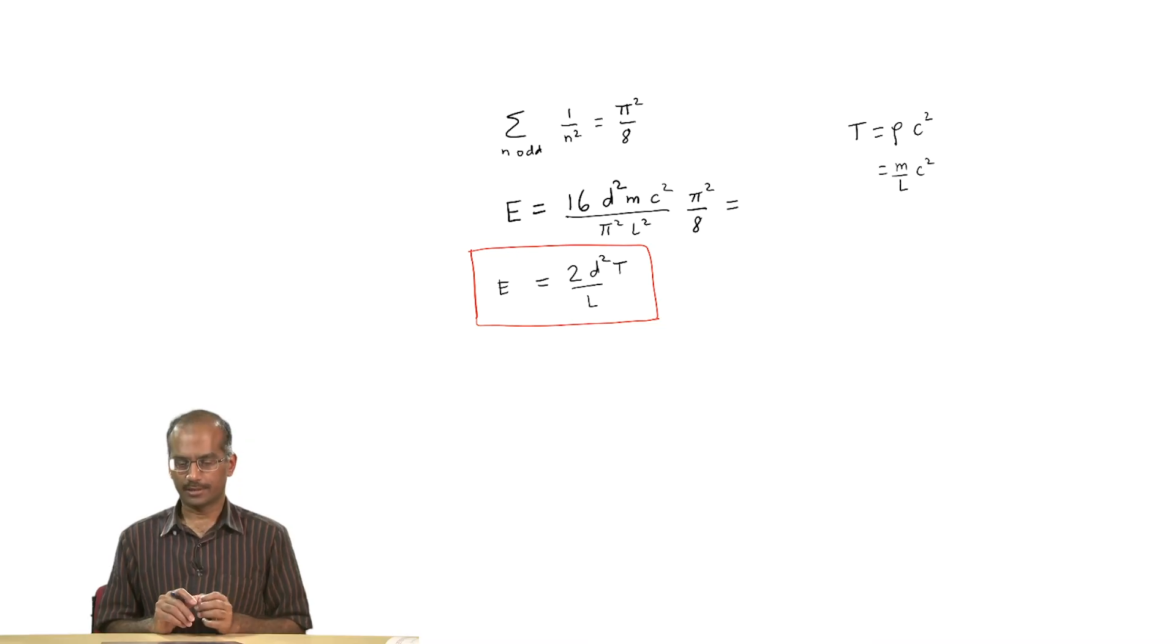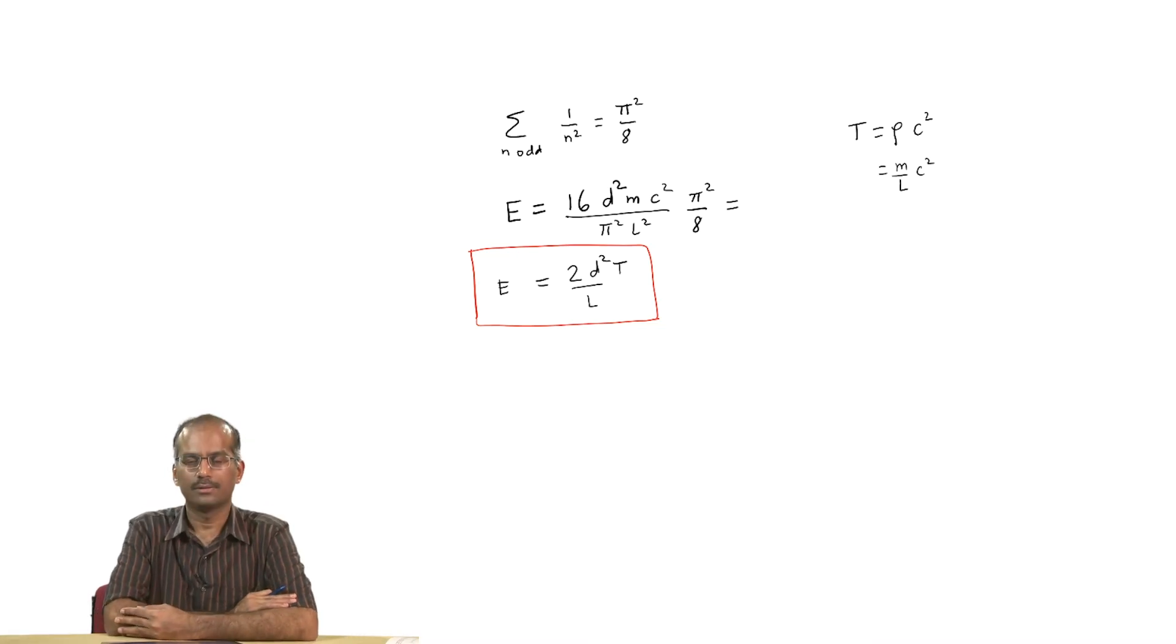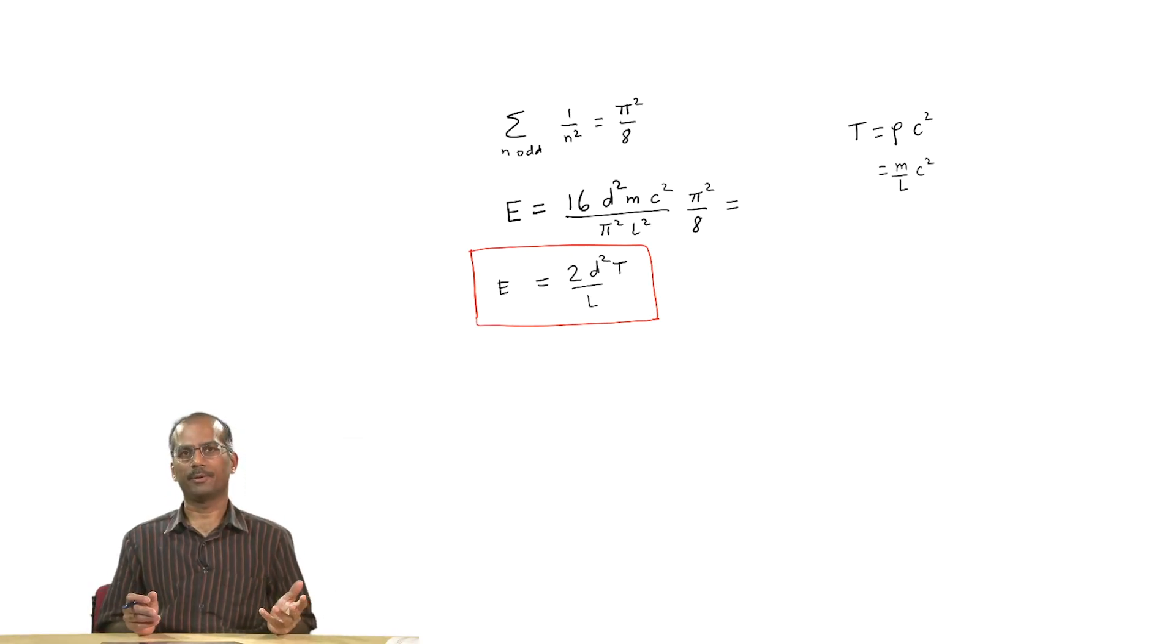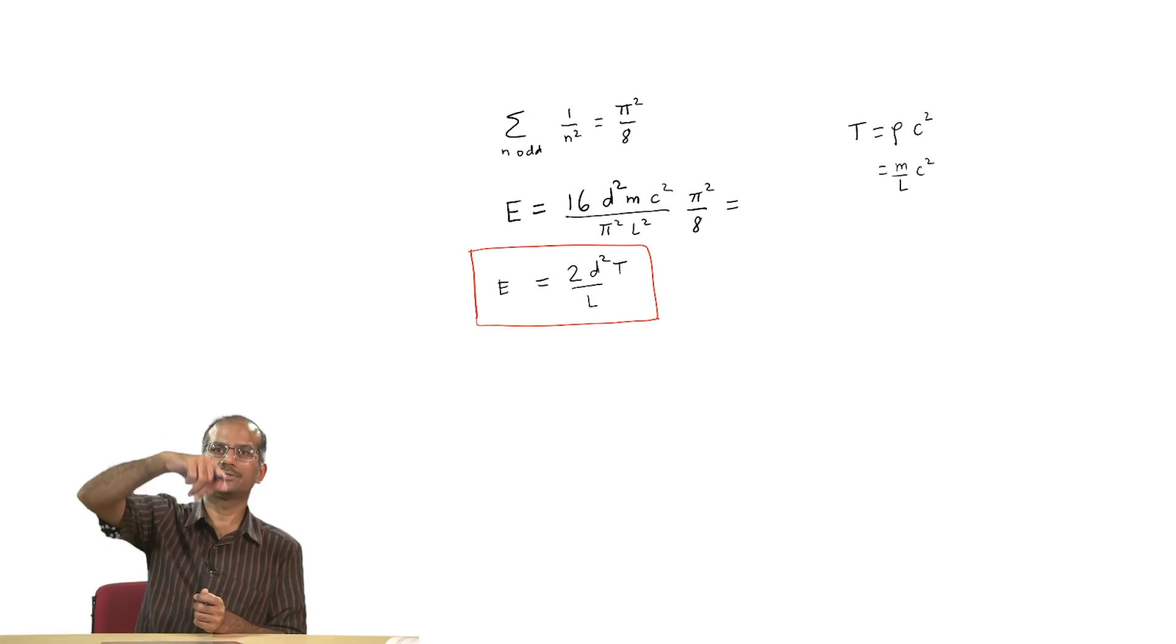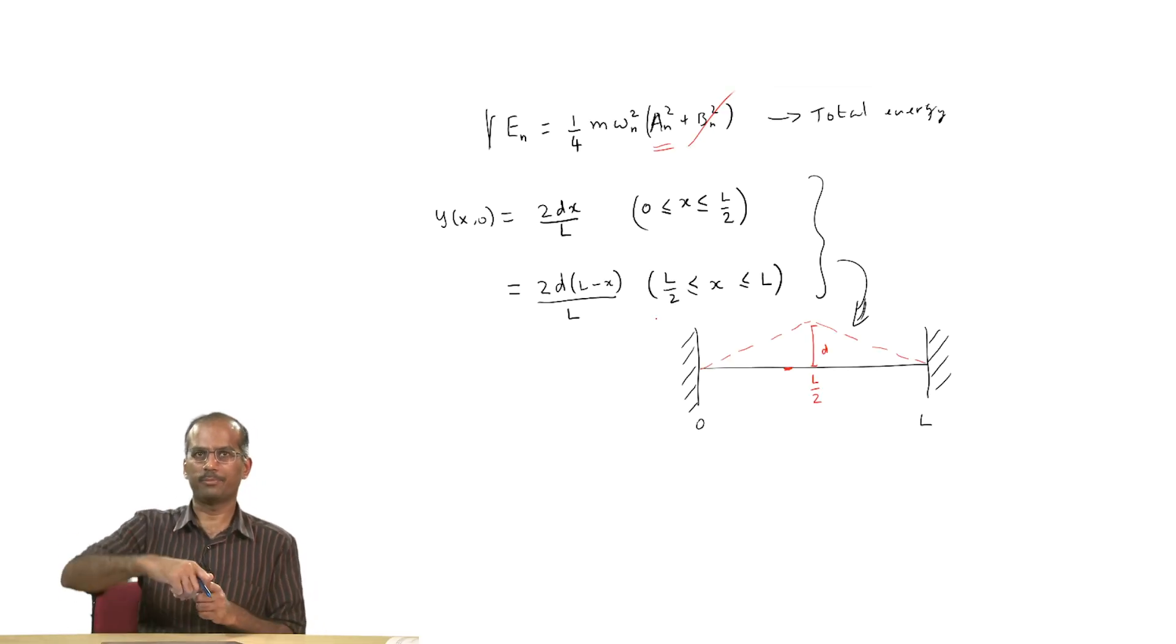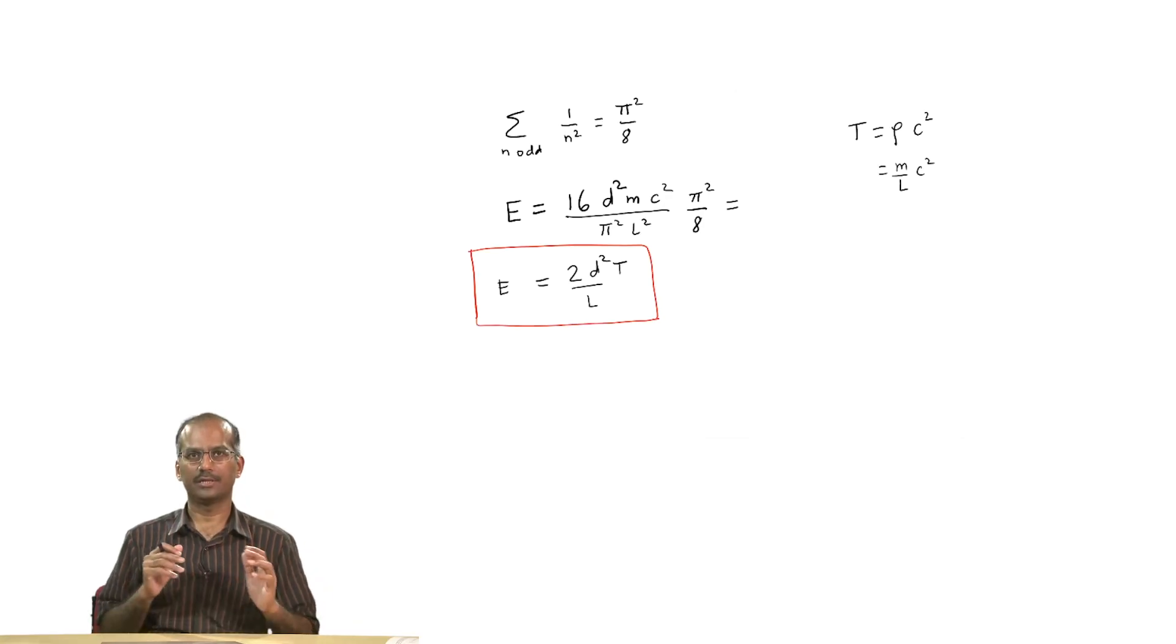You will notice that this relation that we have got depends only on the top level parameters of the problem. It depends on the uniform tension in the string, it depends on the total length of the string between the two walls, and it depends on by how much I pull the string away from the equilibrium position. If you go back to this figure here, I pulled it by an amount d, and it turns out that the energy of the oscillating string is proportional to d squared. Clearly it makes sense because the energy of vibration being the kinetic energy should be equal to the potential energy that was given to it initially. This is precisely because we have not allowed for any dissipation.